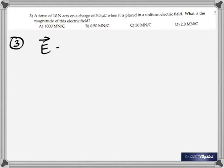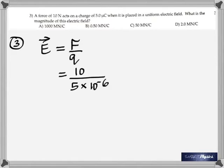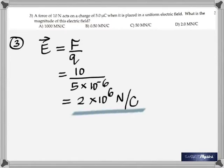Question three: a force of 10 newtons acts on a charge of 5 micro coulomb when it is placed in a uniform electric field. What is the magnitude of this field? This is a straightforward question. The electric field intensity is E = F / q. Here the force is 10 N and the charge is 5 micro coulomb. Dividing gives E = 2 × 10⁶ newton per coulomb.